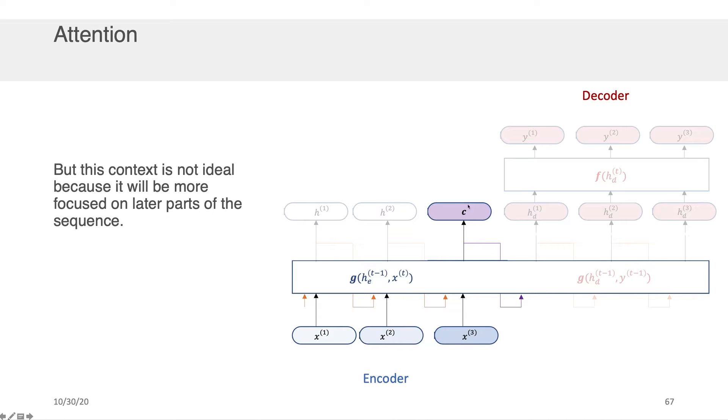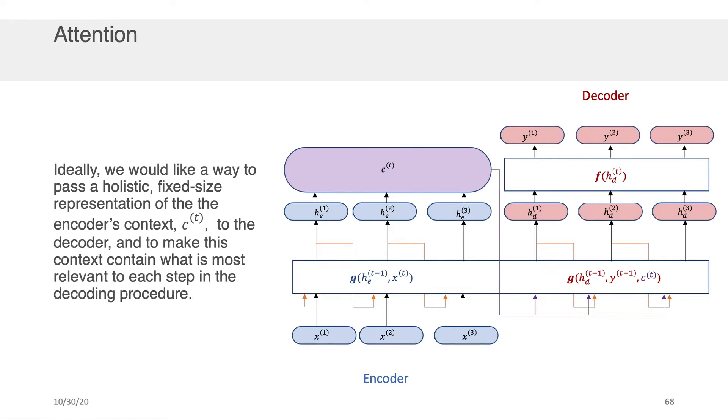And so this particular way of representing the context is not ideal because it will inevitably be focused on things that happen at the end more so than the things that happen at the beginning. Now what we'd really like ideally is if we could pass a holistic fixed size representation of the encoder's context, let's call it c of t, to the decoder on this side and make that context contain what was most relevant to each step in the decoding procedure.